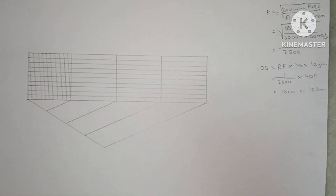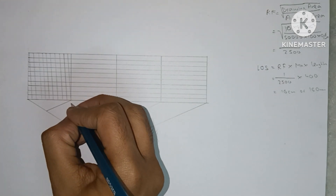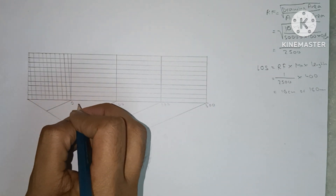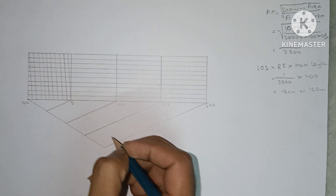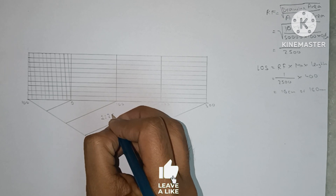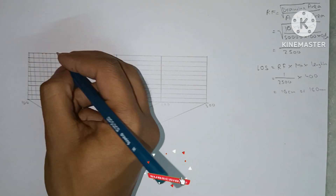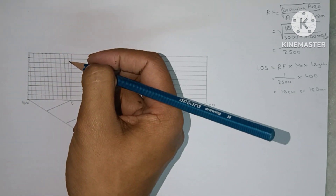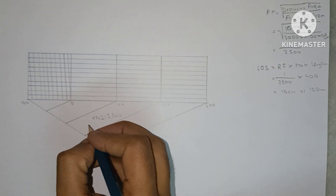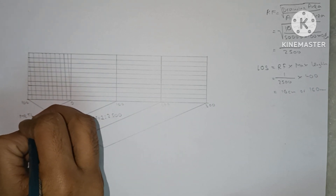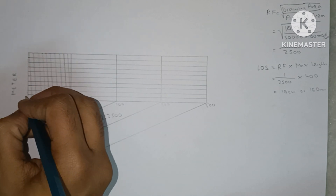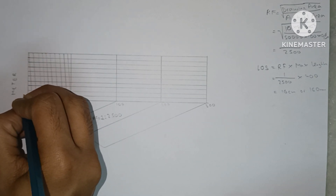The drawing is now complete. We label the points: zero in the center, then 100, 200, 300 going right, and 100 going left of zero. We write the RF as 1:2500 and label the unit as meters on the scale. The 10 subdivisions on the left are labeled 1 through 10, completing the labeling.